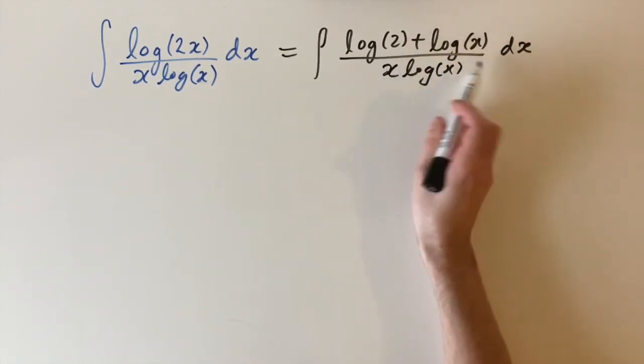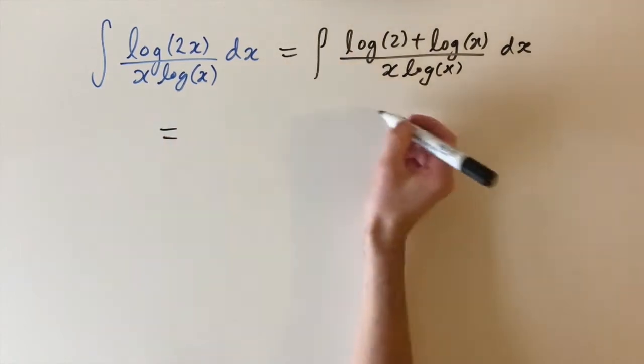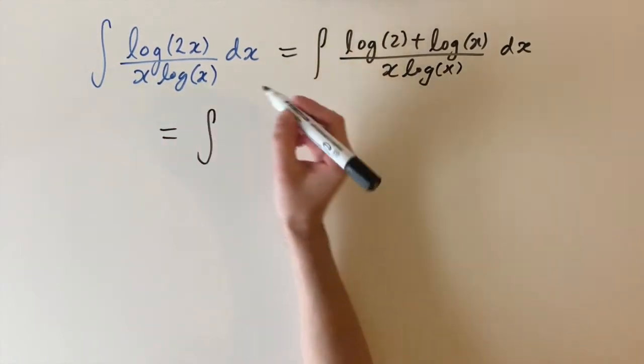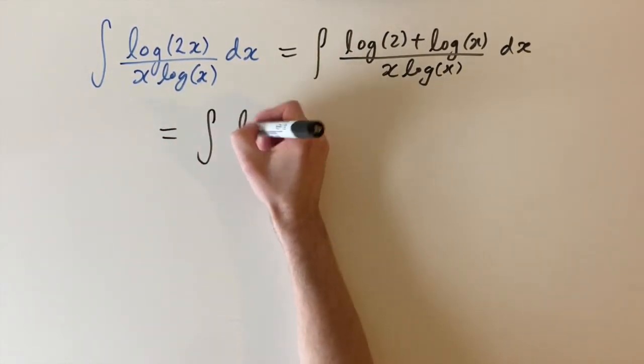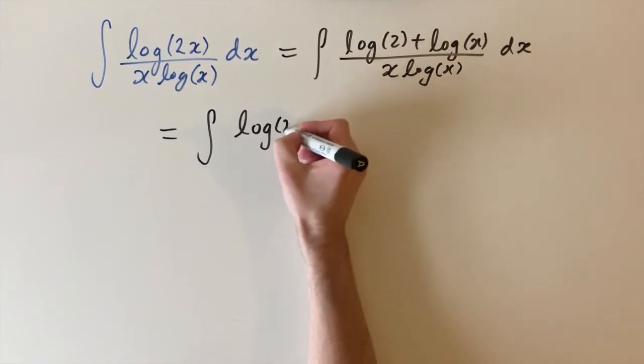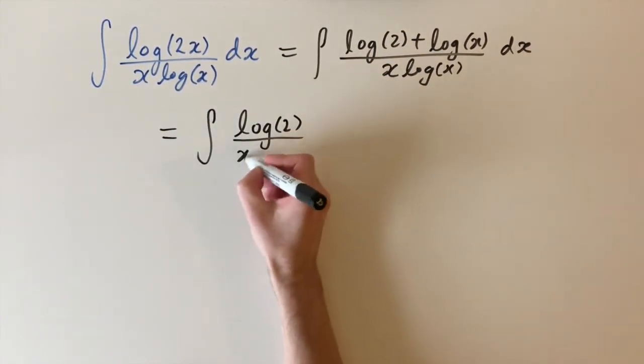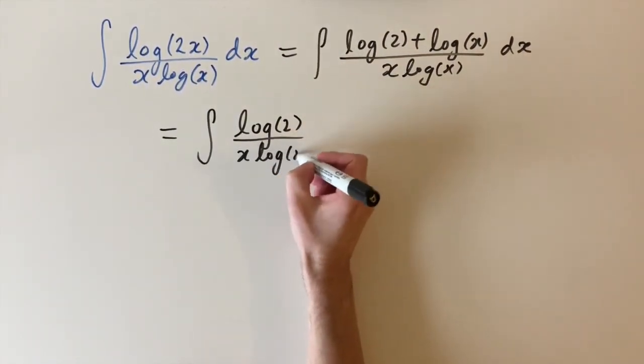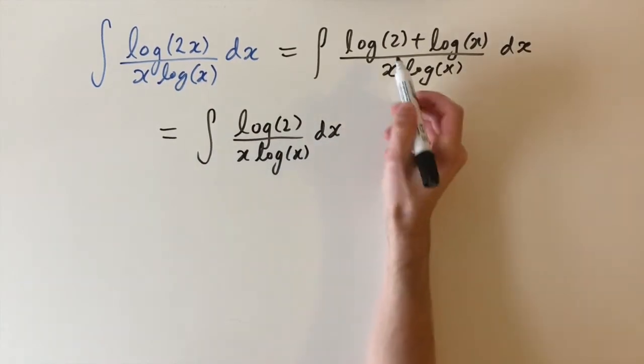So we can split this into two separate fractions. And I'm actually going to write this out as two separate integrals just using linearity. So we have logarithm of 2 divided by x log x dx. This is from the first term.